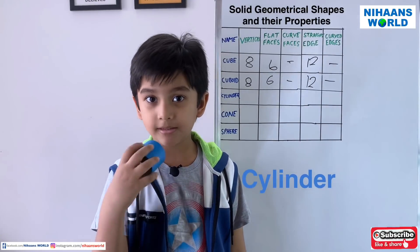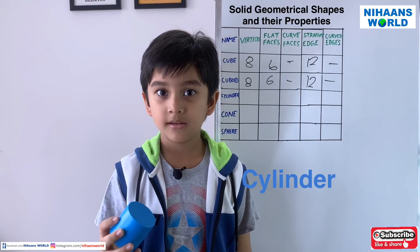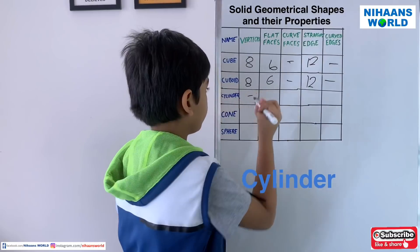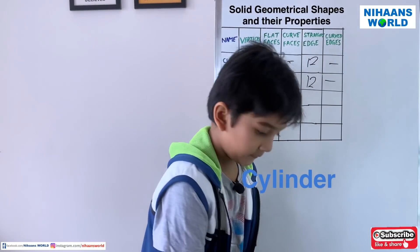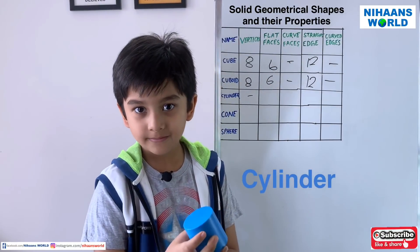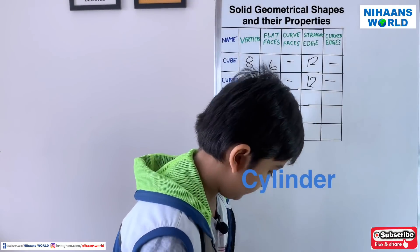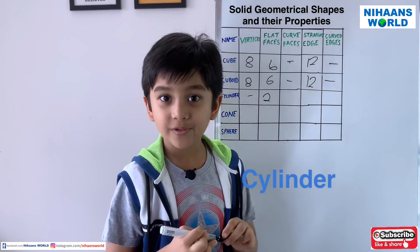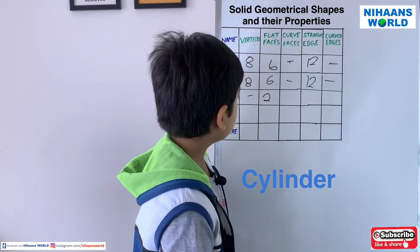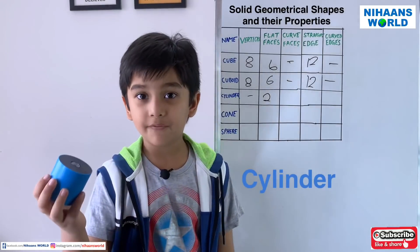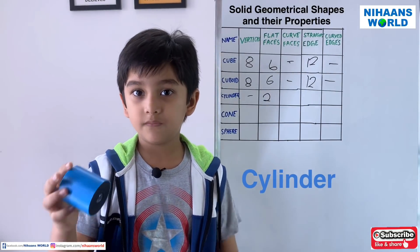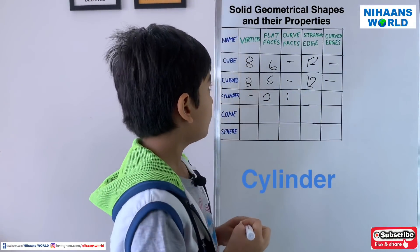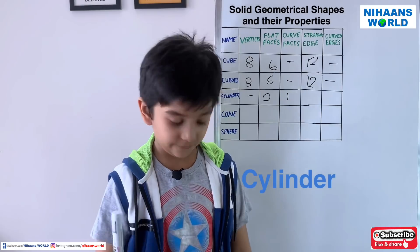This is a cylinder. A cylinder has no vertex. Let us count the flat faces: one, two — so there are 2 flat faces. Now let us count the curved face: one — so we have 1 curved face.